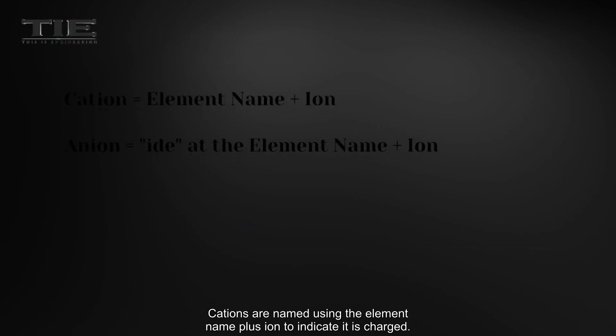Cations are named using the element name plus ion to indicate it is charged. Anions are named by changing the element name ending to 'ide' plus ion.